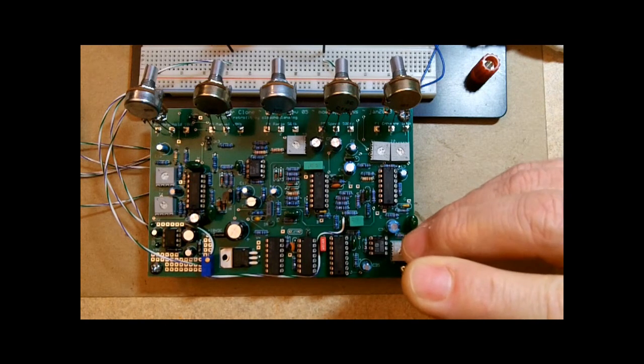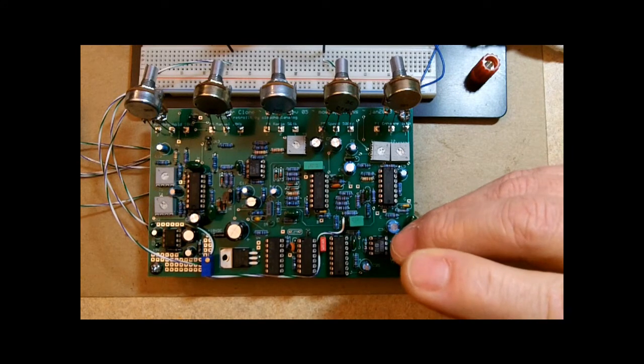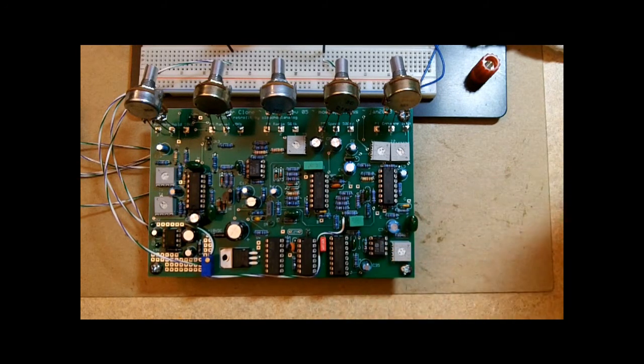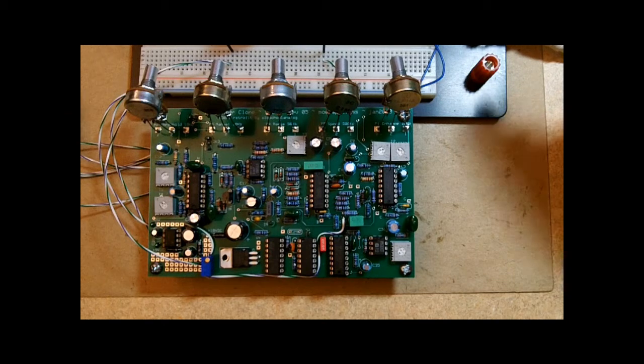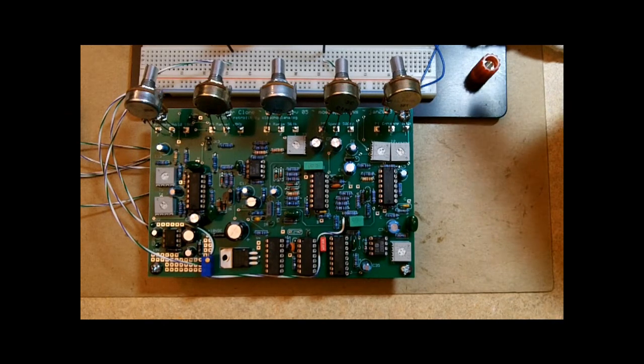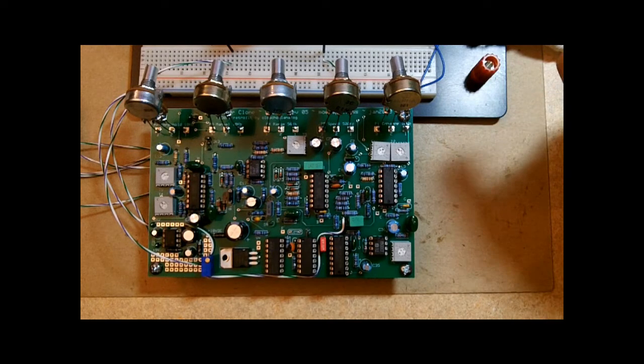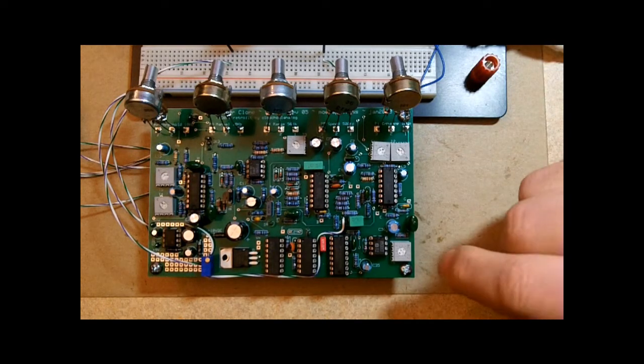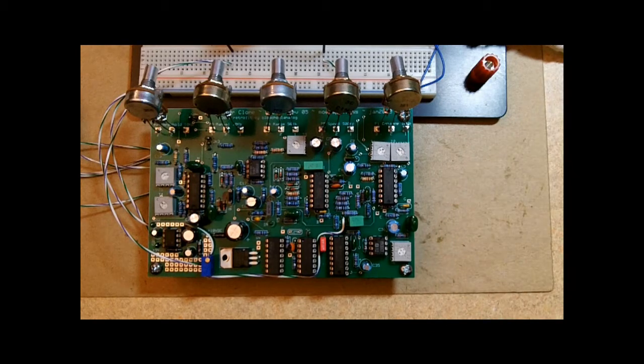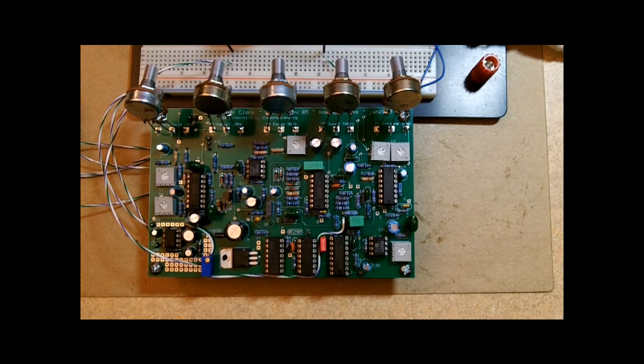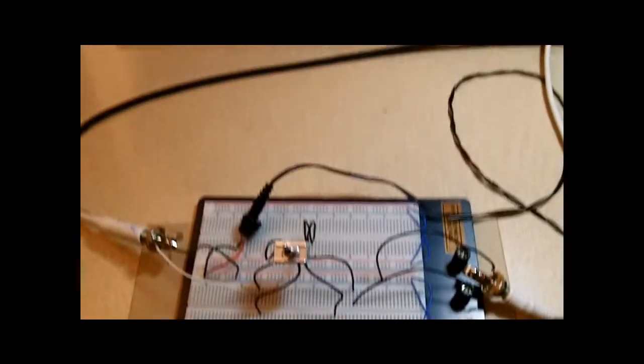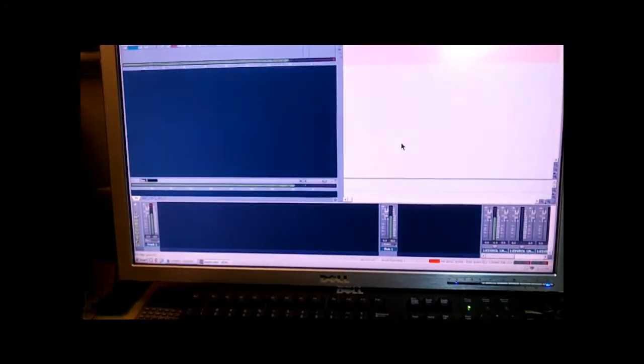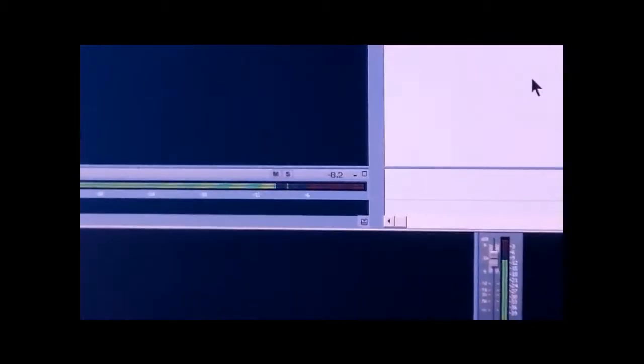So what I'm going to do is I'm going to measure the level of the dry signal using a decibel meter. I'm going to use the level meters in my recording software to measure the level of the dry signal. And then I'm going to turn the delay trim up so that the signal is the same level as the dry signal. Let me pan up to my software and I'll explain this a little bit more.